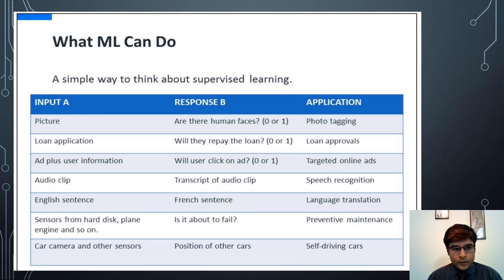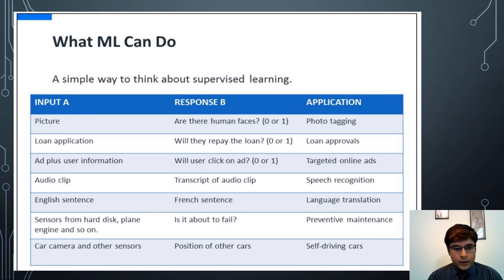Further examples from the supervised learning table: sensors from a hard disk or plane engine as input — is it about to fail? — used in preventive maintenance applications. A car camera and other sensors as input produce the position of other cars as response — used in self-driving car applications.